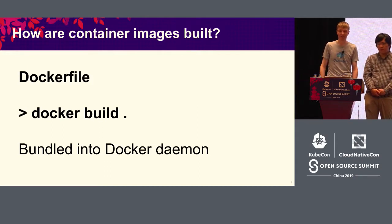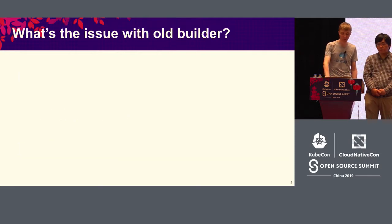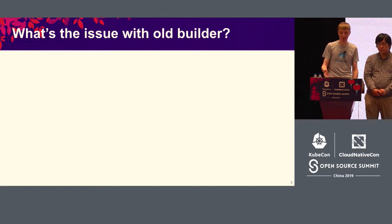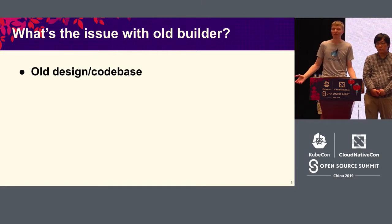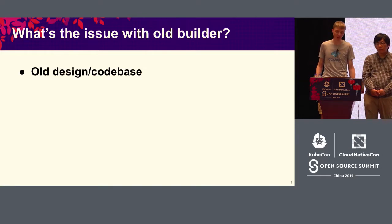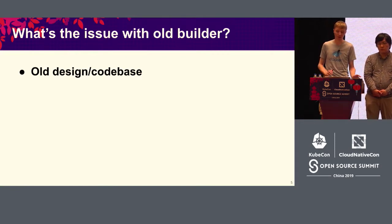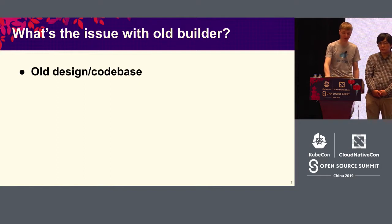This build component was there in the very early days of Docker. So why did we need to change this? What's the issue with the old builder, and why would we need BuildKit? The main reason is that the builder was started in the very early days of Docker, and now we have developed quite a lot. We have different use cases now. We need to build much more complex builds, and we also need much better user experience and developer experience.